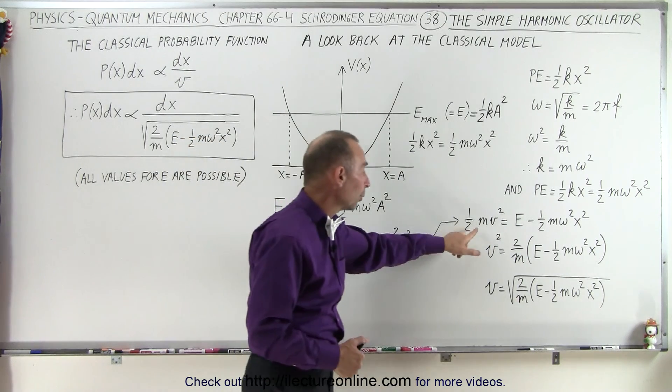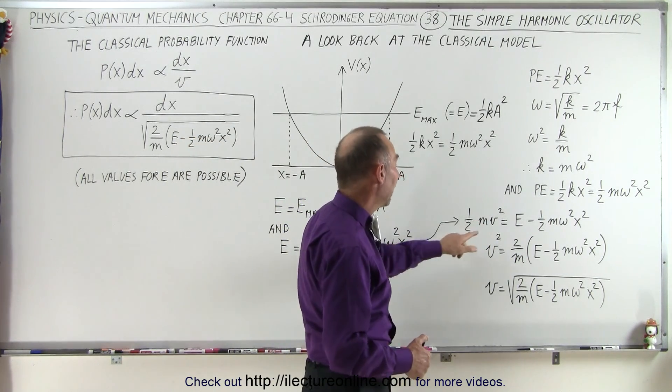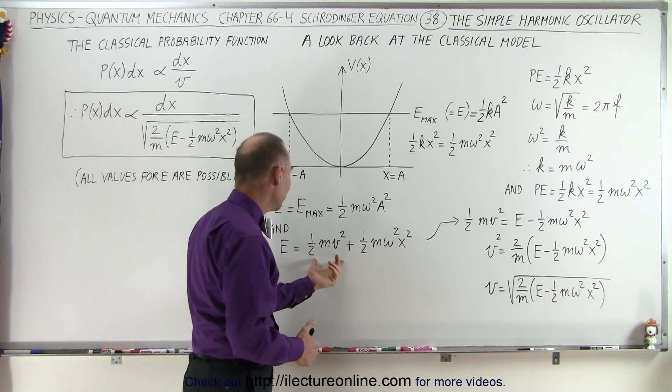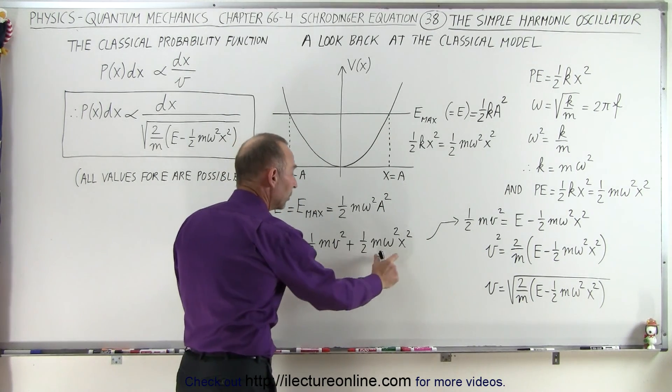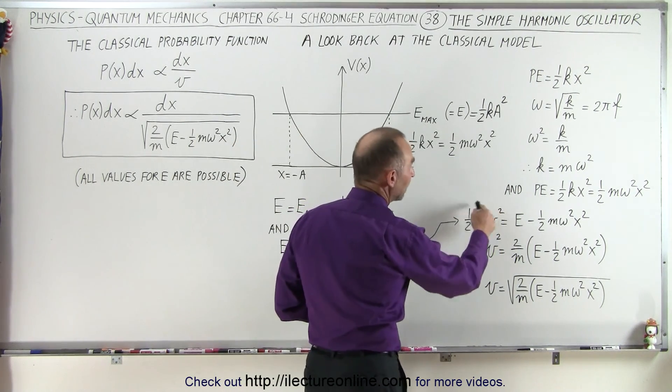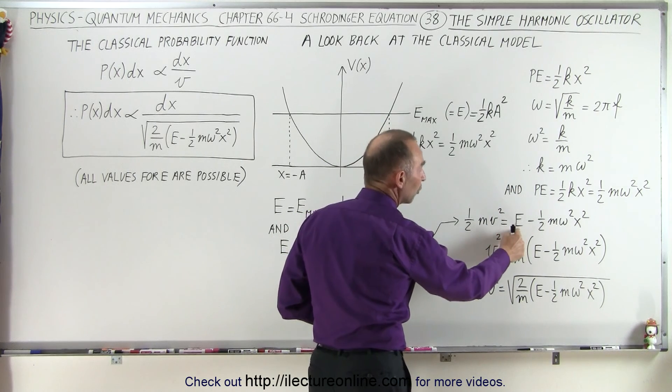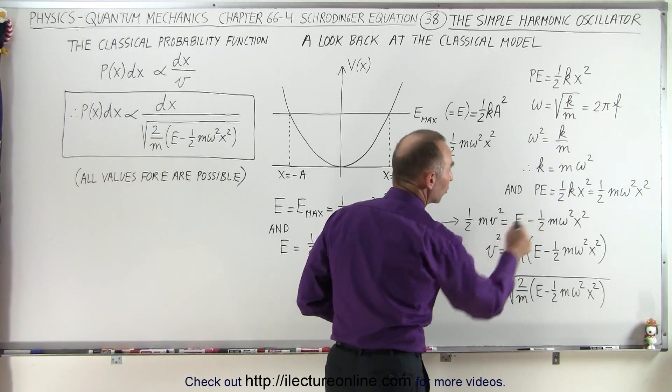So, now, if we go and look at one-half mv squared, and we solve for one-half mv squared in terms of the total energy and the potential energy, we can write the kinetic energy in terms of the total energy minus the potential energy.